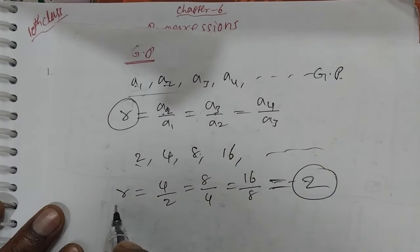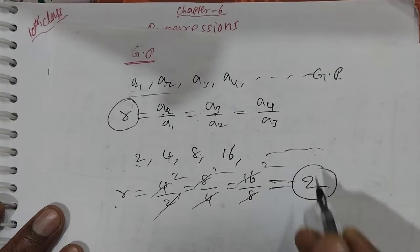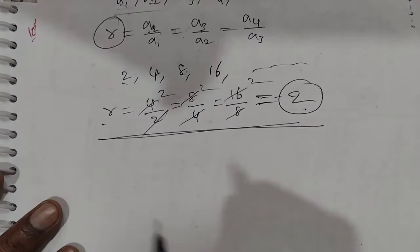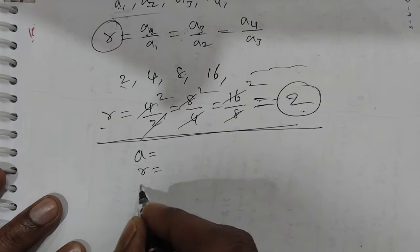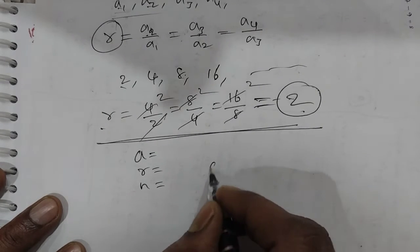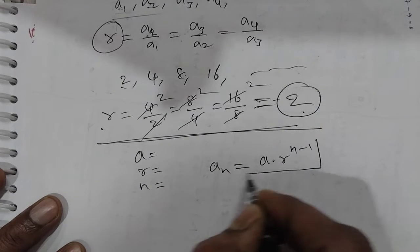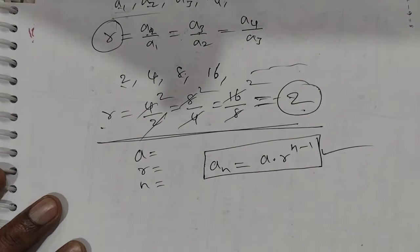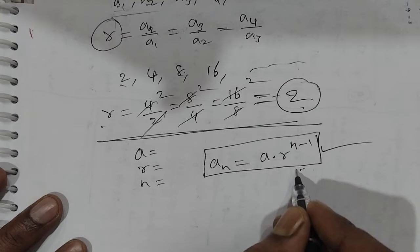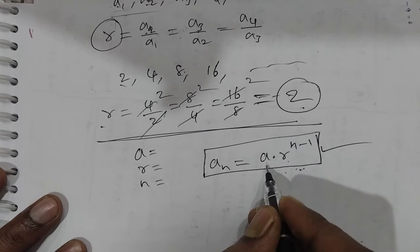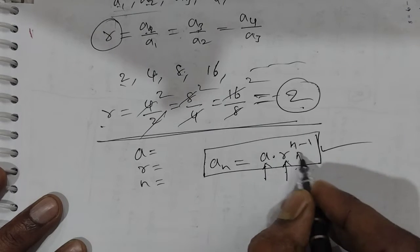For example, if the common ratio is 2: 1, 2, 4, 8 — each term multiplied by 2. In GP, 'a' is the first term, 'r' is the common ratio, and 'n' is the number of terms. The nth term formula is: an = a × r^(n−1).